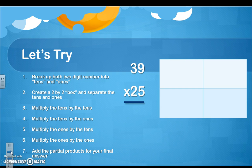Now what we're going to do, we're going to break up the two-digit number into tens and ones. So 39 is equal to 30 plus 9, and 25 is equal to 20 plus 5. So we're going to do 30 and 9 on the top, and 20 and 5 across the side.